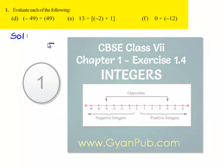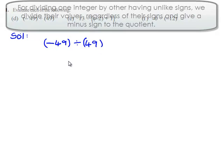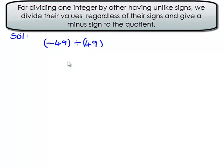We'll see the fourth problem. The question is negative 49 divided by 49. When we divide two integers, first we divide their values regardless of their signs. That is, 49 divided by 49 gives 1.